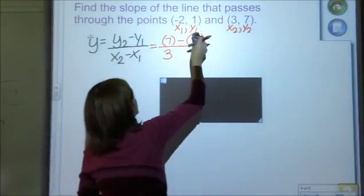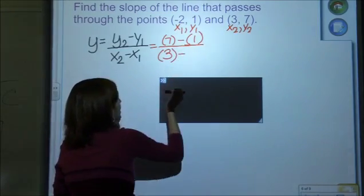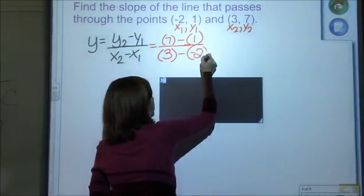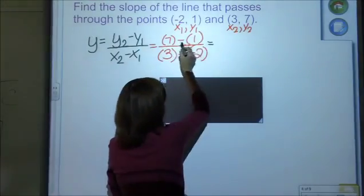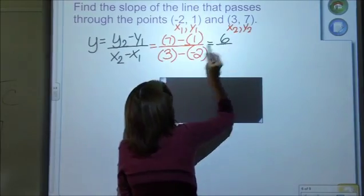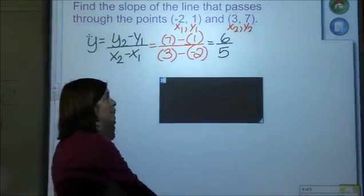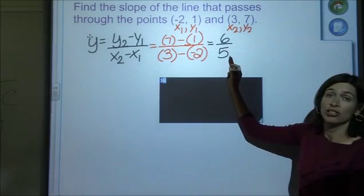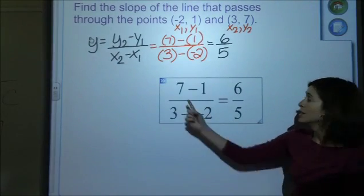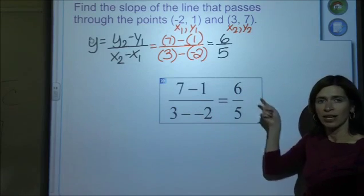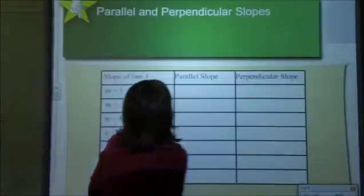I made a mistake. Caught myself. 7 minus my y1. So 1 all over 3 minus my x1, which is negative 2. And that's really why I'm putting the parentheses, is for that negative 2. So I'm not going to forget that I have a negative and a negative and it becomes positive. So I have 7 minus 1, which is 6. I have 3 minus negative 2. So 3 plus 2, which is 5. So my slope is 6 over 5. That means that I am going up 6 and to the right 5. So let's check and see if we are right. 7 minus 1, 3 minus negative 2, so 6 over 5. My rise over my run. My rate of change.